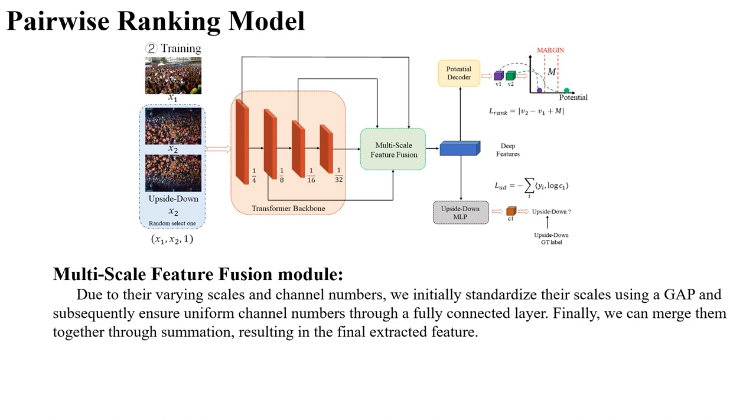Due to their varying scales and channel numbers, we initially standardize their scales using a global average pooling and subsequently ensure uniform channel numbers through a fully connected layer. Finally, we can merge them together through summation, resulting in the final extracted feature.